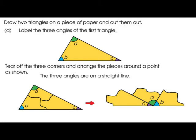What do you observe? The three angles are on a straight line. What angles does the straight line make? They are making angles of 180 degrees. So the sum of angles on a straight line is 180 degrees. Therefore, we can say that the sum of all angles in a triangle is equal to 180 degrees.